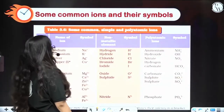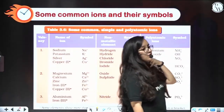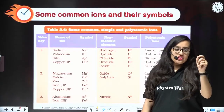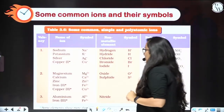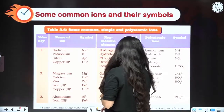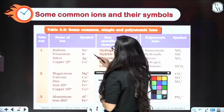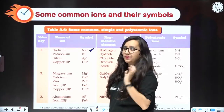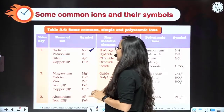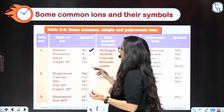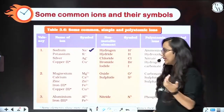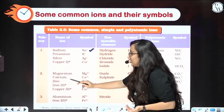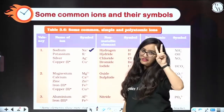We will get more clarity with examples. But before going to examples, let us review some valencies. Sodium is Na⁺ — valency plus 1. Potassium is K, plus 1. Silver is also plus 1. Copper is plus 1. With valency 2: magnesium, calcium, zinc, iron, and copper all have valency 2, meaning they are ready to donate 2 electrons.